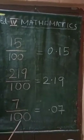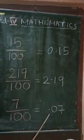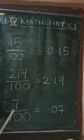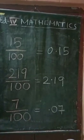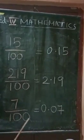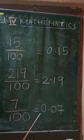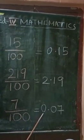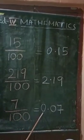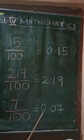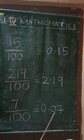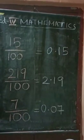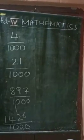7 by 100 equals 0.07. Here there is no whole number part, so put 0. So, 7 by 100 — we can write its decimal form as 0.07.